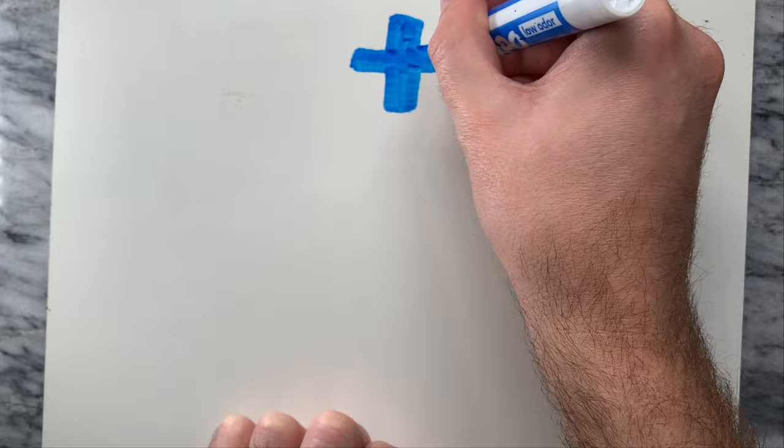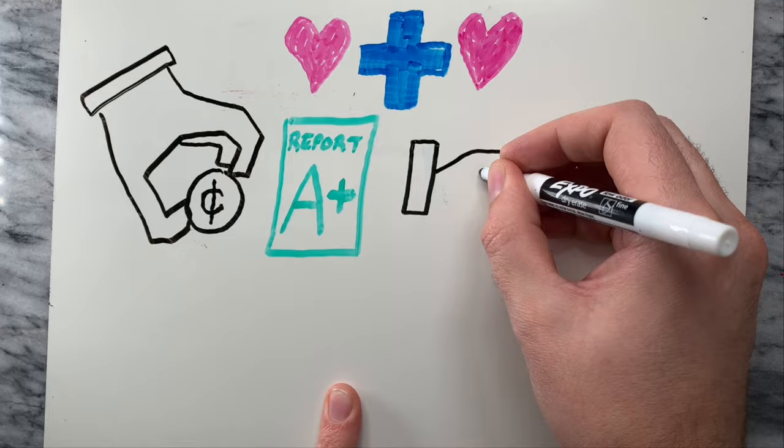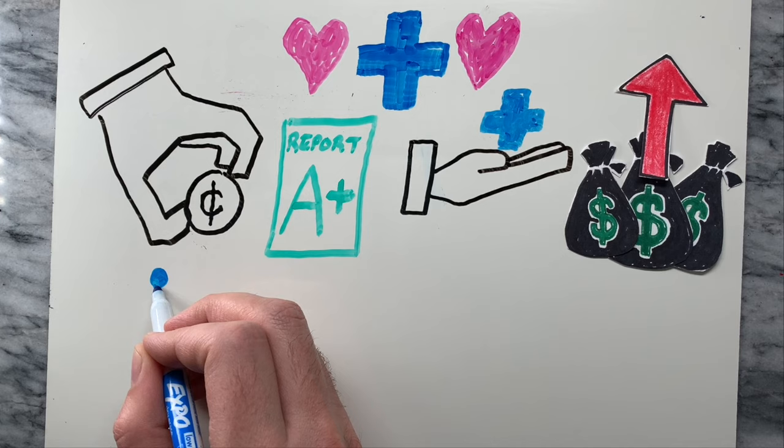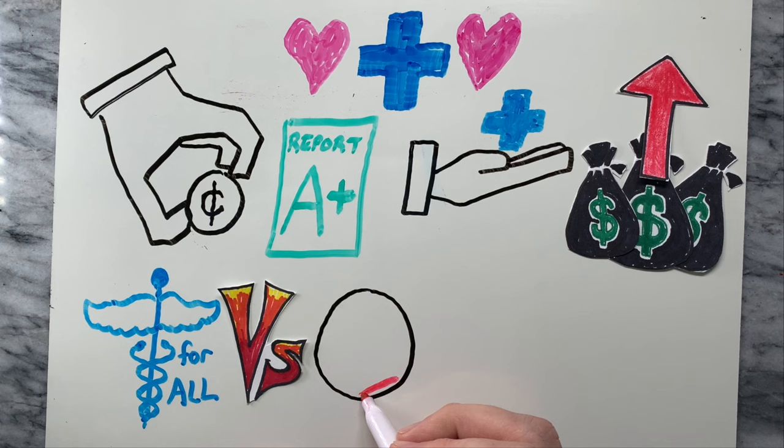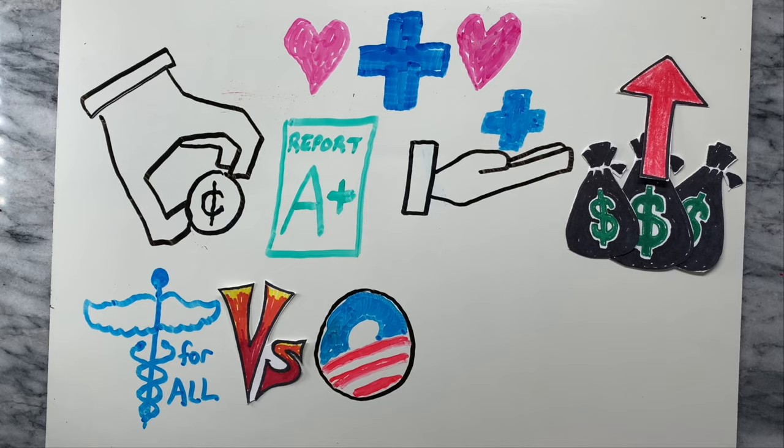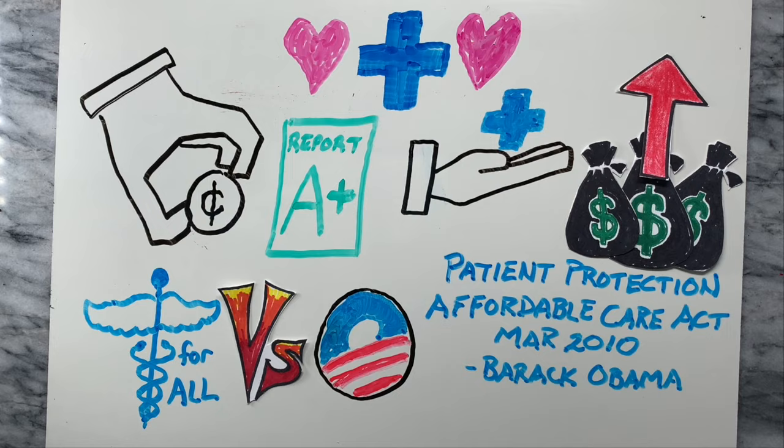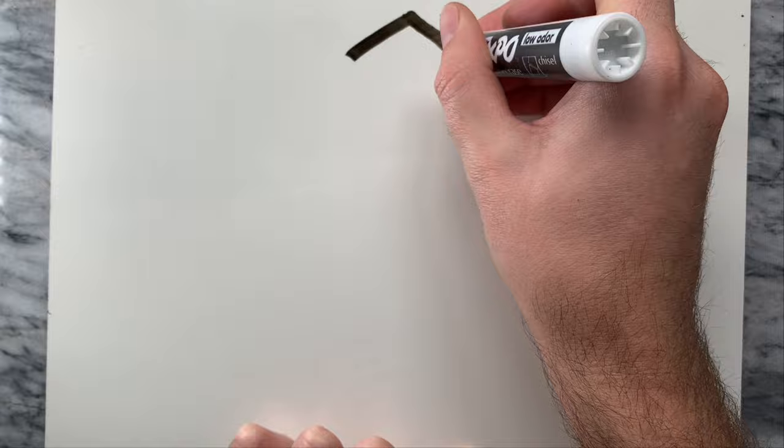For health care, the Democratic Party calls for affordable and quality health care and favors moving toward universal health care in a variety of forms to address rising health care costs. Some Democratic politicians favor a single-payer program or Medicare for All, while others prefer creating a public health insurance option. The Patient Protection and Affordable Care Act, also known as Obamacare, which Democratic President Barack Obama signed into law on March 23, 2010, has been one of the most significant pushes for universal health care.